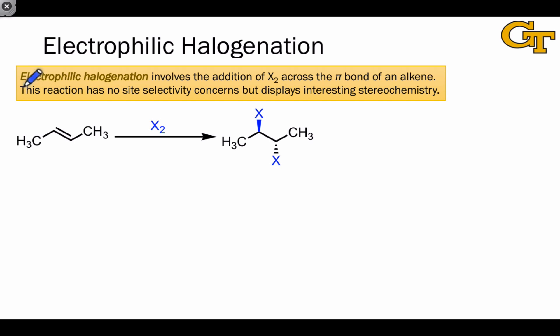In an alkene context, electrophilic halogenation involves the addition of X2 across the π bond of an alkene. The products of this reaction are vicinal dihalides, called vicinal because the new carbon-X bonds have a 1-2 relationship.